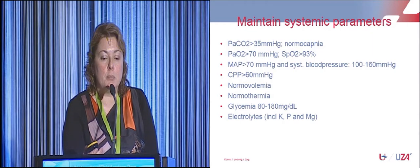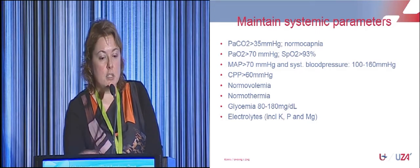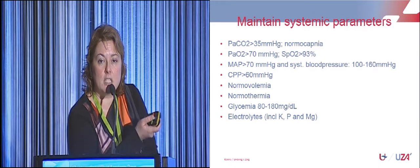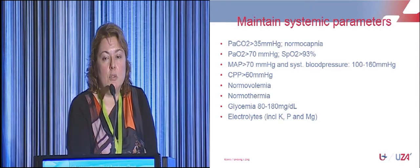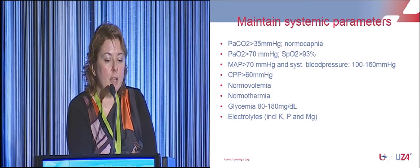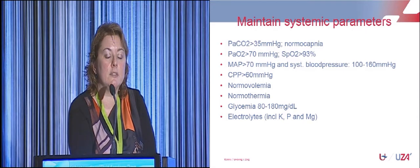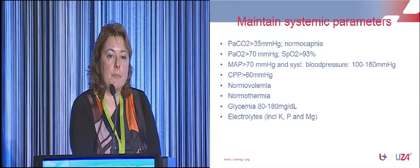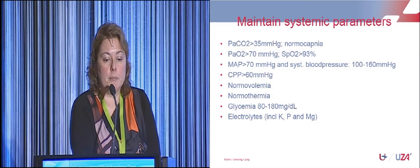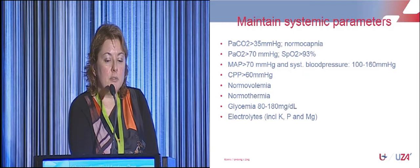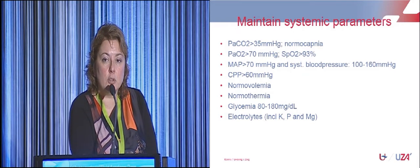Mean arterial pressure should be above 70 mmHg, but looking at CPP — which should be 60 mmHg — if ICP is 20, you need a MAP of 80 to maintain CPP. The patient should be normovolemic. We used to think you should dehydrate patients with traumatic brain injury and keep them dry, but that's not true because it leads to hemodynamic instability. Normovolemia is now the goal. Also treat fever and glycemia, and monitor electrolytes including potassium, phosphorus, and magnesium — low phosphorus and magnesium lower the seizure threshold.